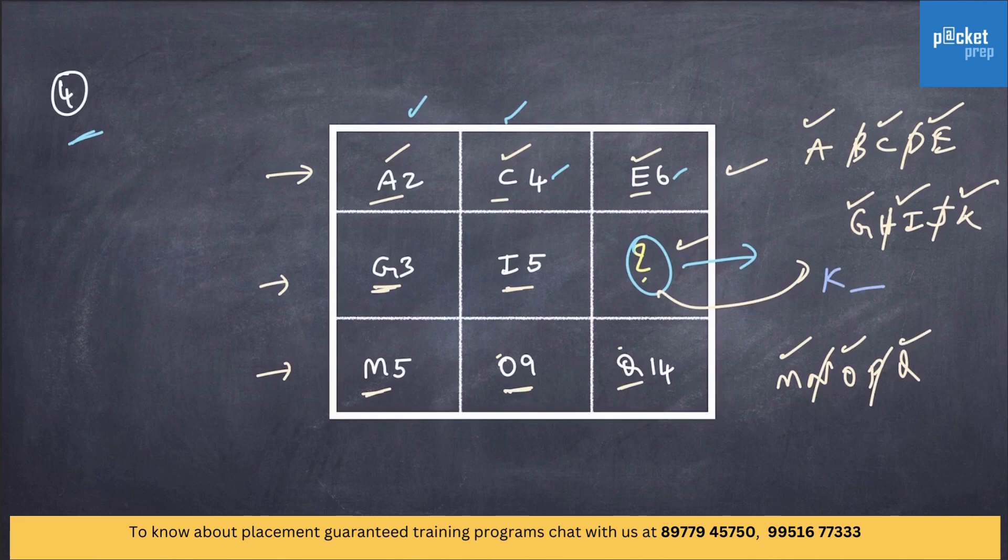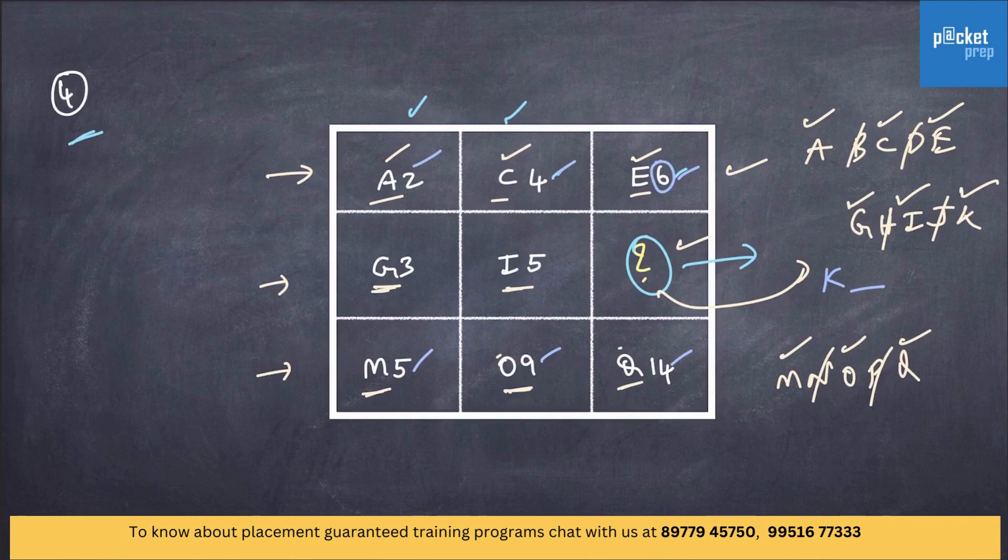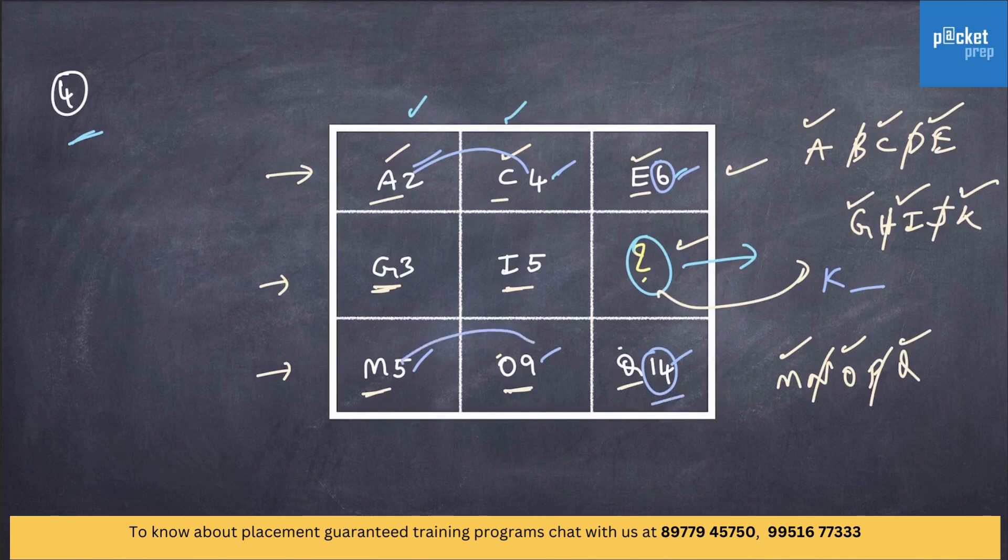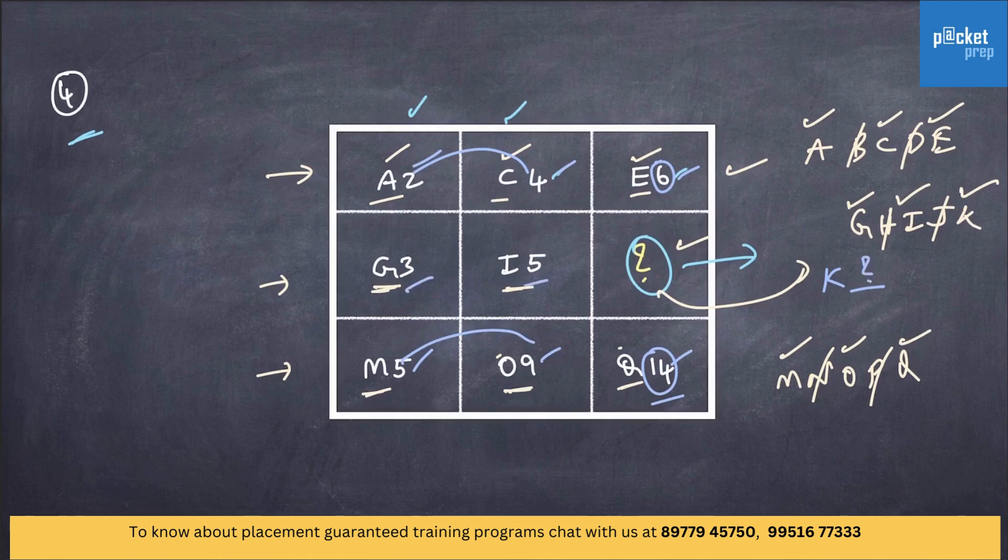Now, let's focus on the numbers 2, 4, 6, 5, 9, and 14. In the first row, it is 6. If you can observe, it is clearly evident that 2 plus 4 is equal to 6. Similarly, in the third row, it is 14. So, 9 plus 5 is equal to 14. Now, what could be the number here? The numbers are 3 and 5. So, the missing number is 8.